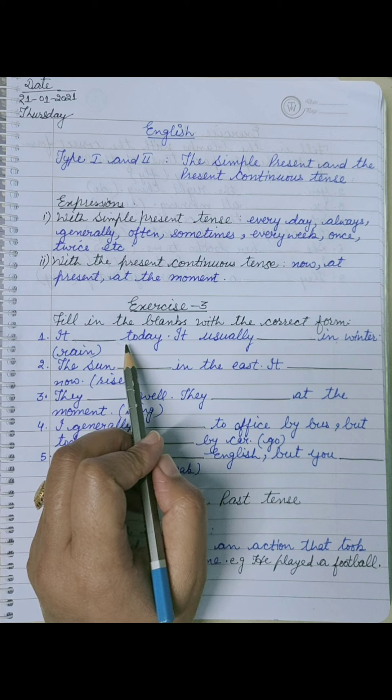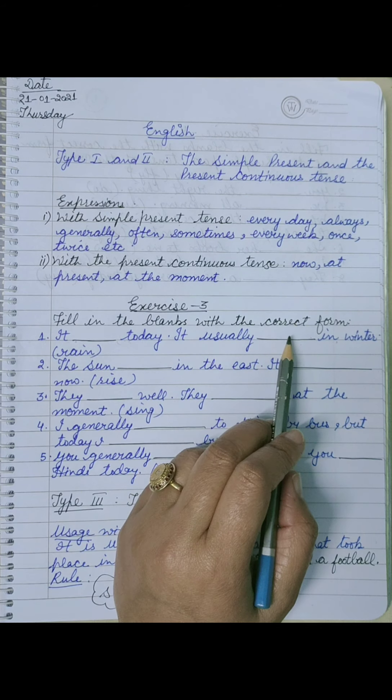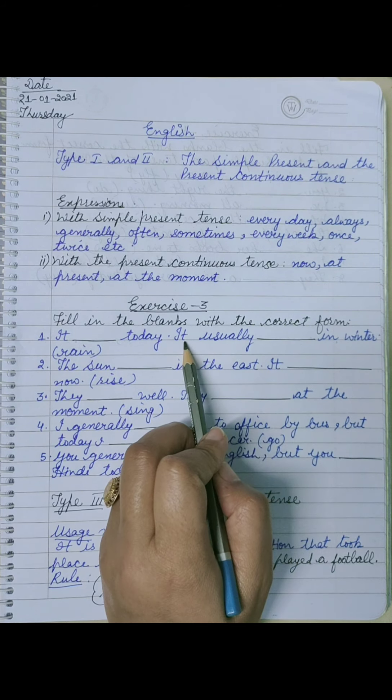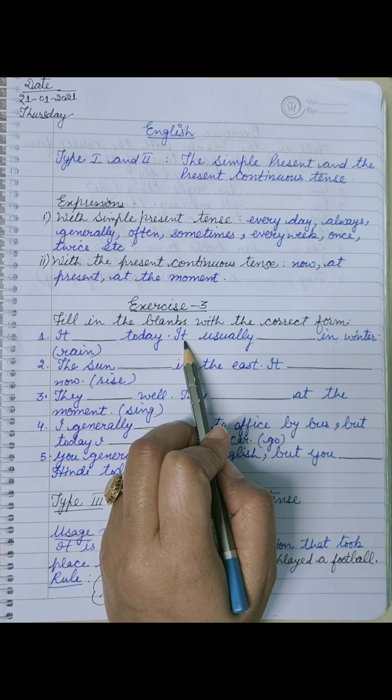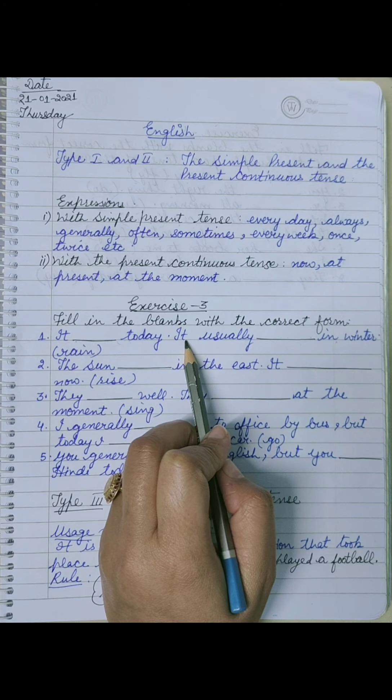First, it dash today means आज की बात बता रहें - it is raining today. It usually rains in winter, तो it के साथ हम क्या use करते s और es.